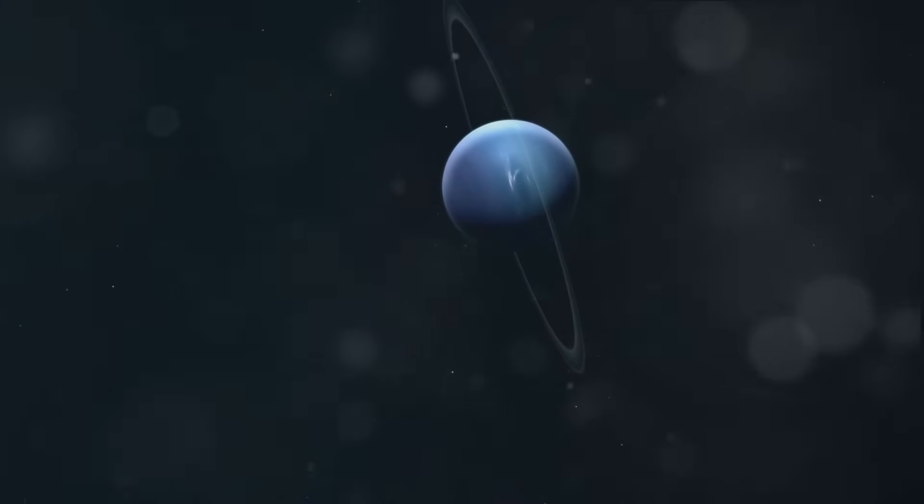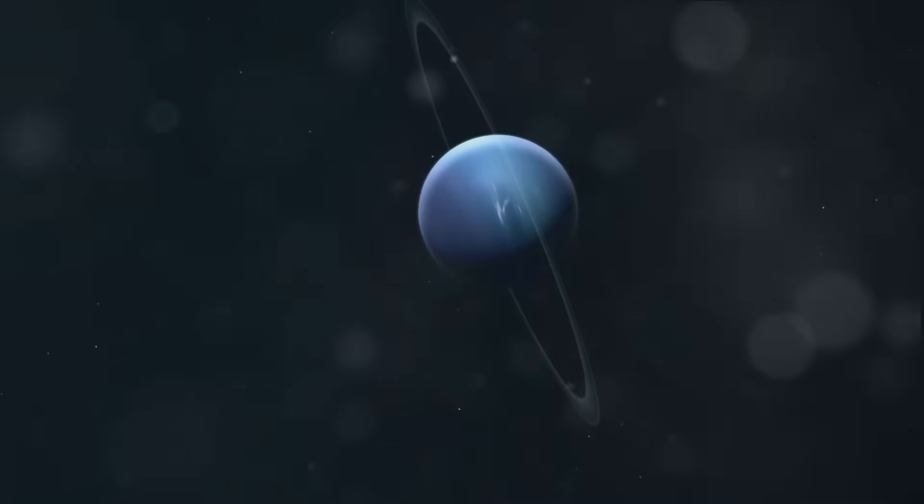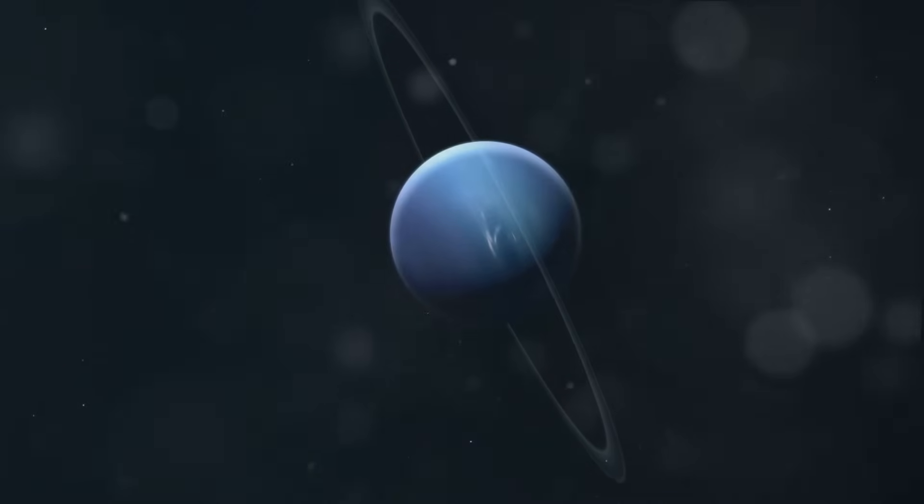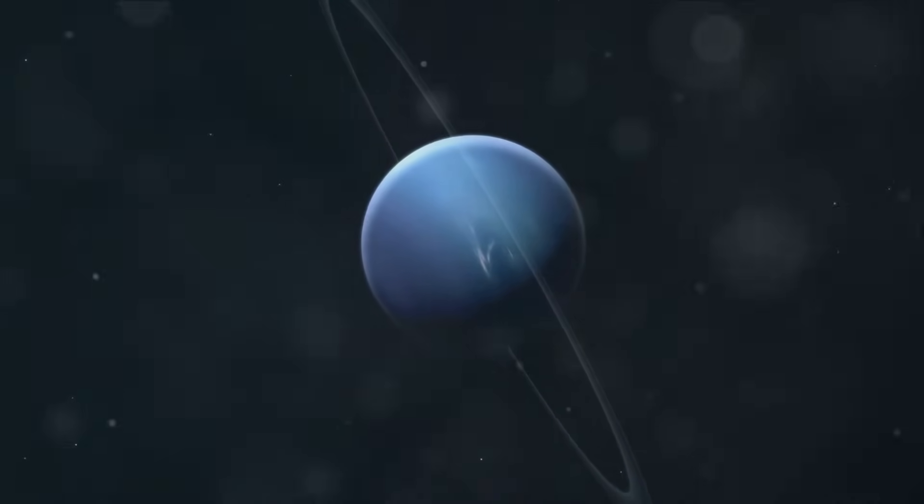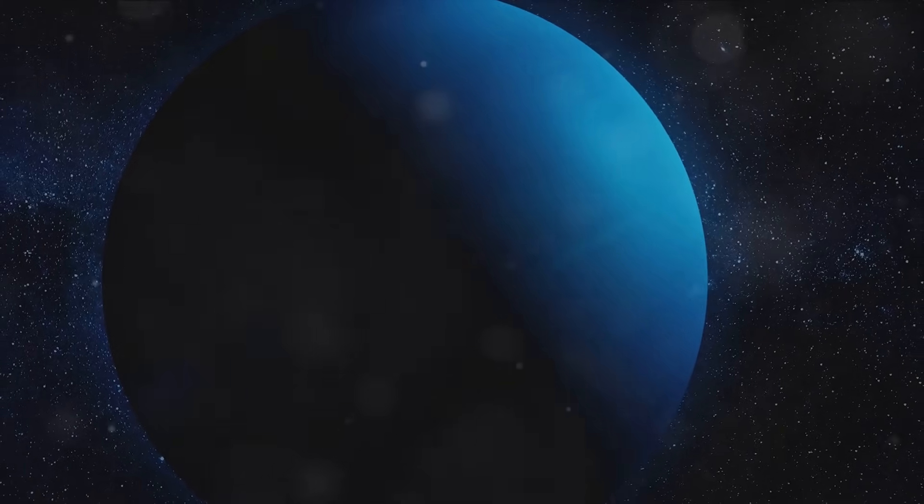Next, we encounter Neptune, the furthest planet from the sun in our solar system. Don't let its distance fool you though. Neptune is a world of extreme weather, with the fastest winds in the solar system, reaching speeds of over 1,000 miles per hour. That's faster than the speed of sound on Earth.